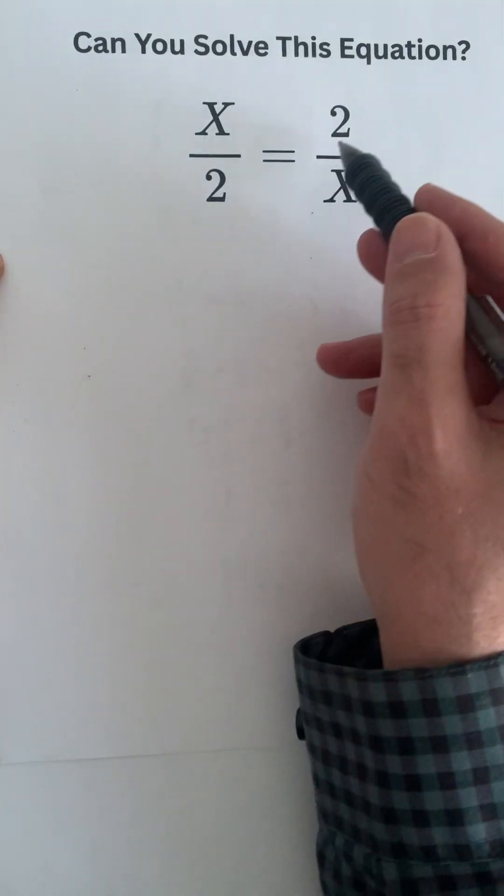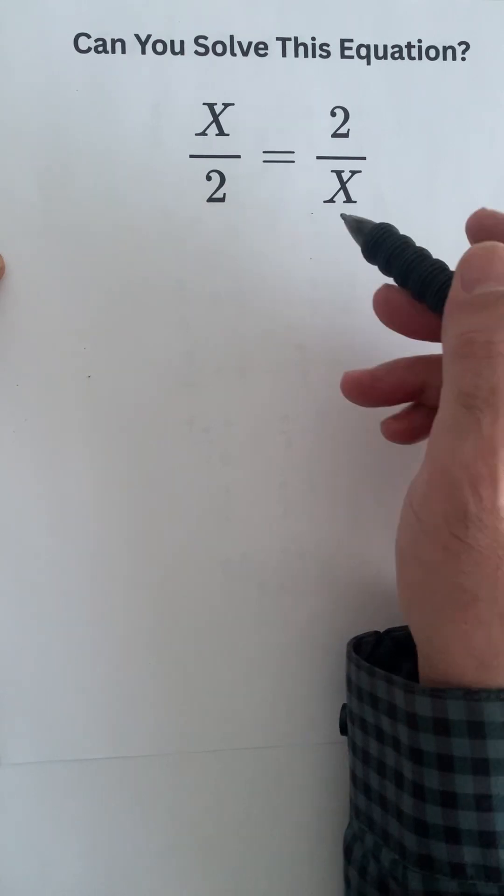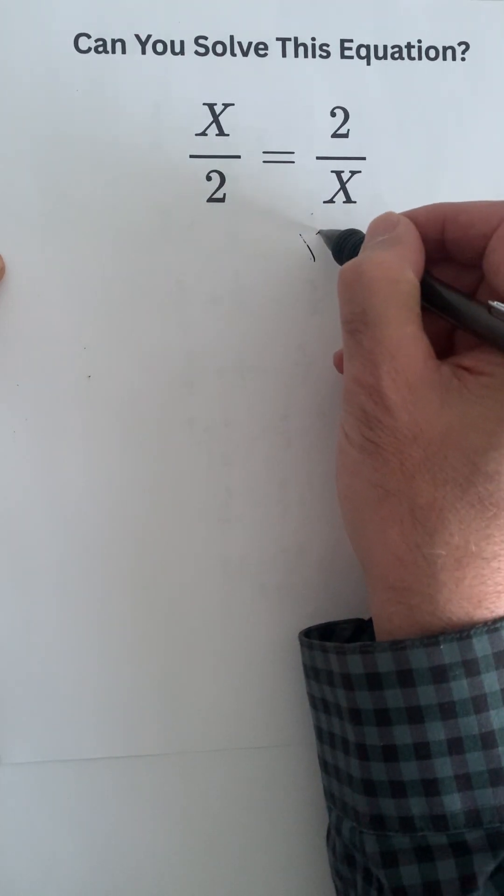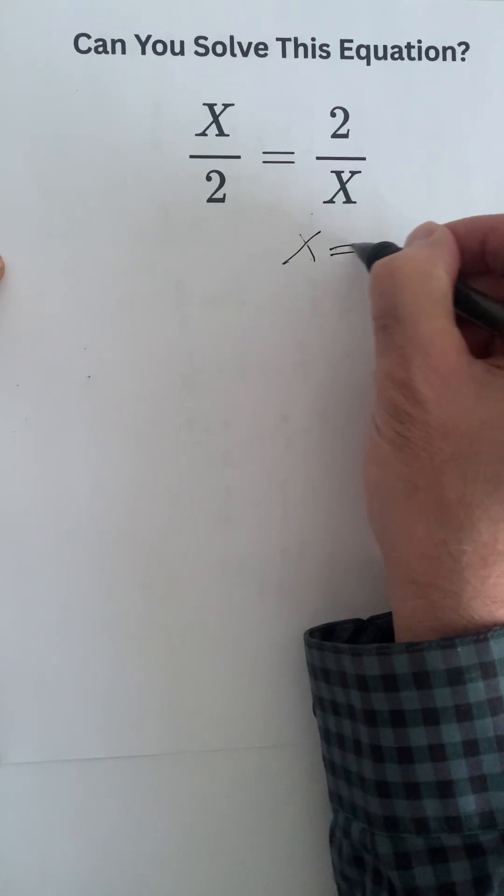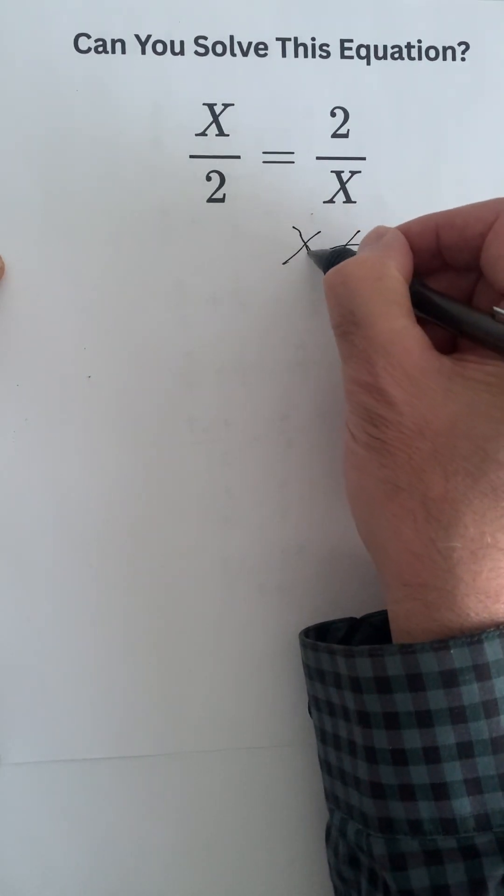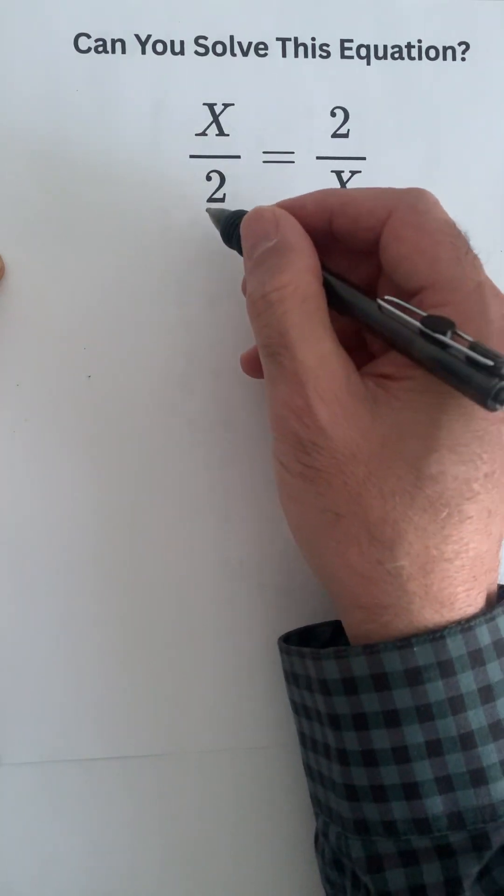Hello, we have today an equation to solve: x over 2 equals 2 over x. Of course, we only can do that if x is different from 0, because then we can do the division 2 over x.